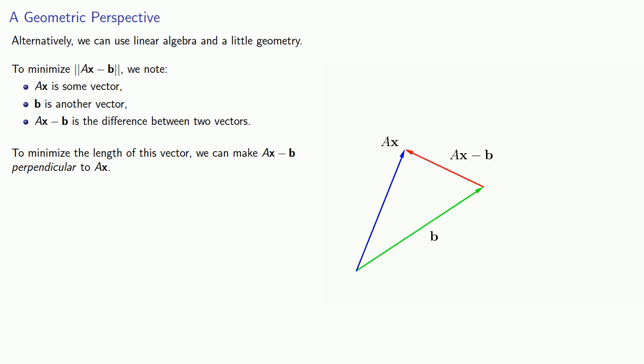And so from our geometric perspective, we can require Ax dot Ax minus b to be zero. Let's rewrite this equation. So I could distribute the dot product and rearrange my equation slightly.